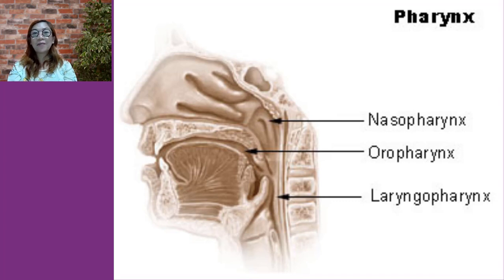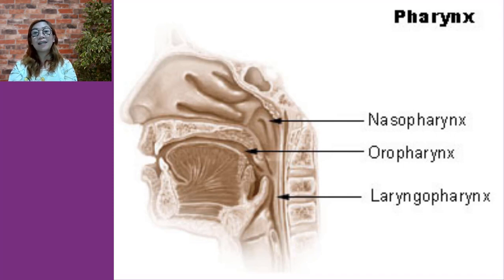The pharynx, commonly called the throat, is a passageway that extends from the base of the skull to the level of the sixth cervical vertebra. It serves both the respiratory and digestive systems by receiving air from the nasal cavity and air, food, and water from the oral cavity. Inferiorly, it opens into the larynx and esophagus. The pharynx is divided into three regions: the nasopharynx, the oropharynx, and the laryngopharynx.